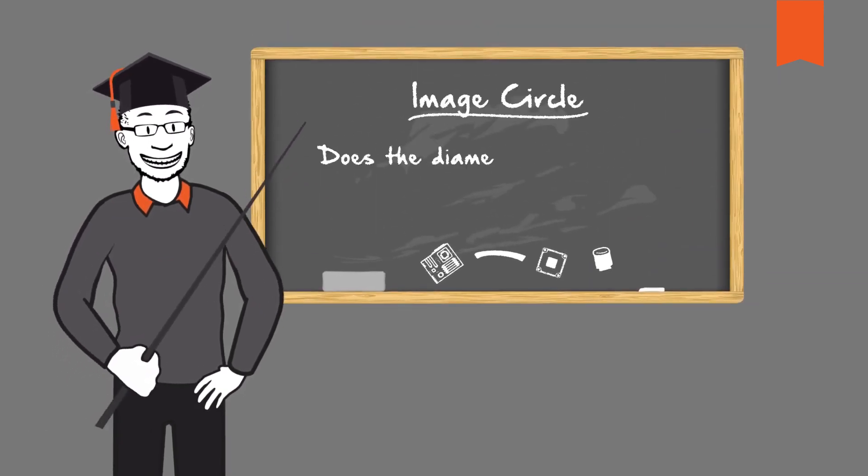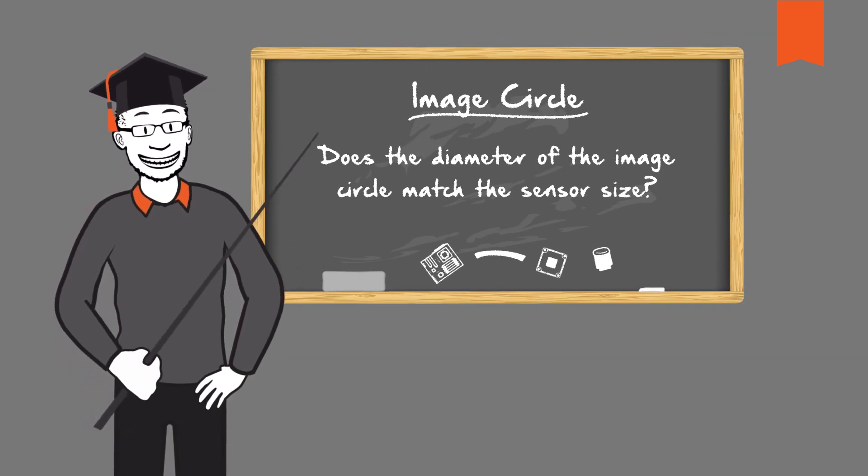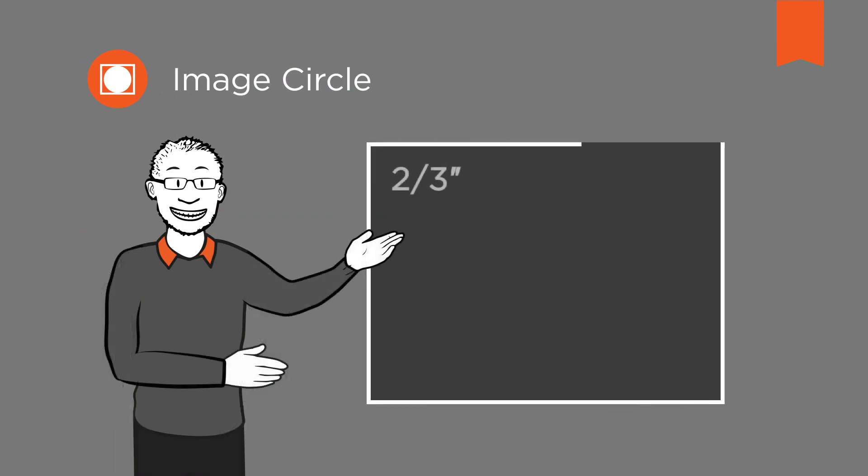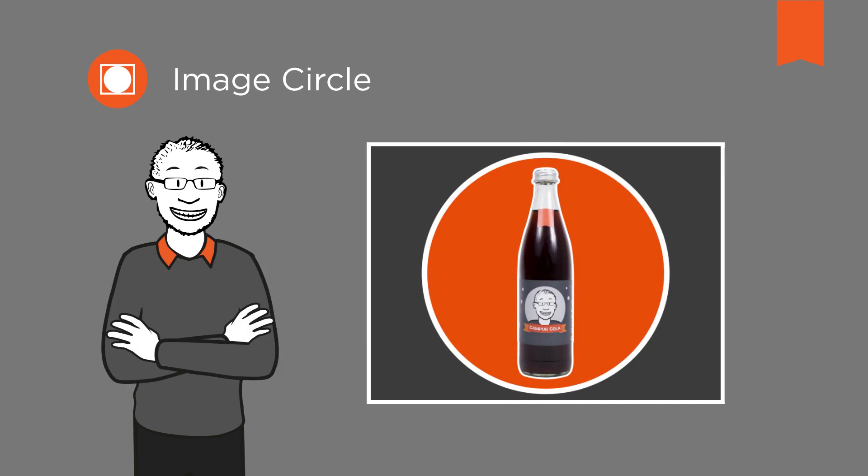Does the diameter of the image circle match the sensor size? The required image circle is determined by the size or diagonal of the sensor. A lens selected to match the sensor size ensures that the scene to be captured is optimally imaged on the sensor surface. If the image circle for the lens and the sensor is the same, it minimizes unwanted distortions and ensures homogeneous illumination from the center of the image up to the edge.